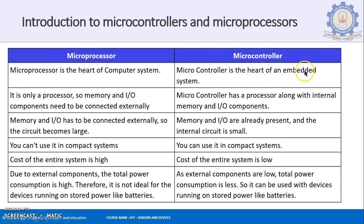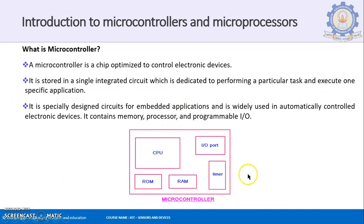What are the differences between a microprocessor and a microcontroller? The microprocessor forms the heart of the computer system, whereas the microcontroller forms the heart of the embedded system. In a microprocessor, it is only a processor — memory and IO components need to be connected externally. Whereas in a microcontroller, it has a processor along with the memory and IO components inside, as we saw in the diagram — all within the particular chip.